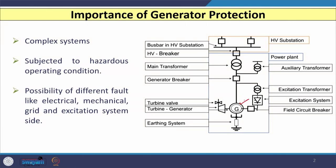With a generator, you have some earthing systems associated with it. You also have the breaker associated with these generators, known as the generator breaker. Along with the generator, you have the excitation system, the excitation breaker known as the field circuit breaker, and the excitation transformer is also connected. The generator contains stator and rotor, along with excitation systems.